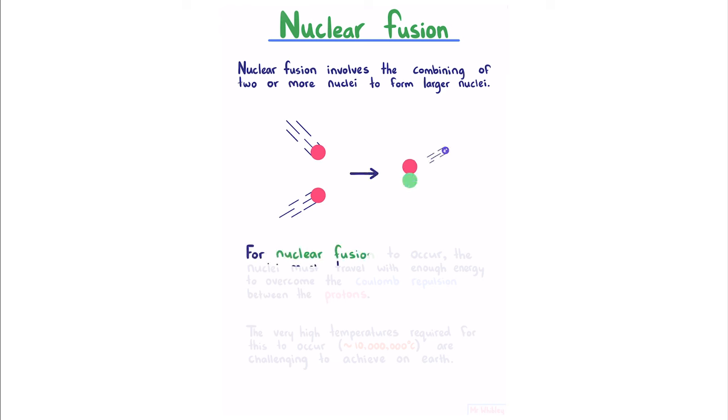For nuclear fusion to occur, the nuclei must travel with enough energy to overcome the Coulomb repulsion between the protons. The very high temperatures required for this to occur, upwards of 10 million degrees Celsius, are challenging to achieve on Earth.